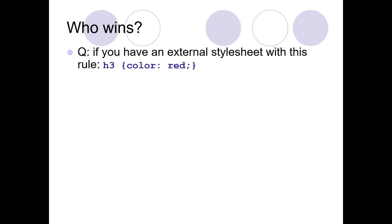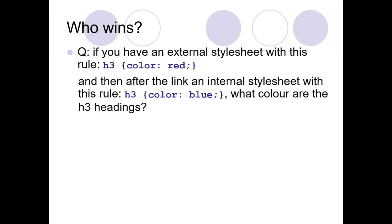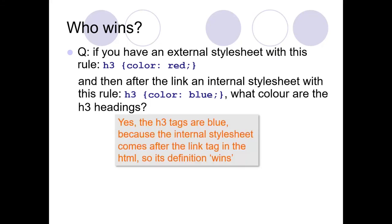Here's an example question. So we've got an external style sheet with this rule, H3, and color red. And a link to an external style, internal style inside of that page with the rule H3, color blue. What color are any H3 headings on the page? That's the answer. Tags are blue because the internal style sheet comes after the link tag. So the second definition wins because it comes second in the order.